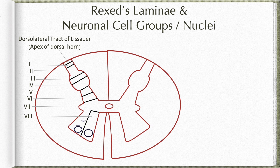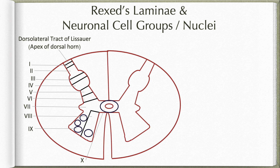Lamina 9 is much larger wherever there is limb enlargement and again occupies the ventral horn. It contains both alpha and gamma motor neurons, which supply intrafusal and extrafusal fibers of the skeletal muscle. Lamina 10 is arranged around the central canal, occupying the central grey commissure region. So laminae 1 to 10 are arranged from dorsal to ventral aspect, with lamina 10 arranged around the central canal.